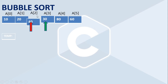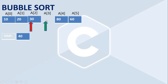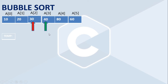We place A[J] into the temporary variable, then A[J+1]'s value becomes A[J], and the temporary value is placed back into A[J+1]. Now these elements are in ascending order. We increment the pointer and compare the next two, which are in ascending order — so no further swapping needed. We increment the pointer again.